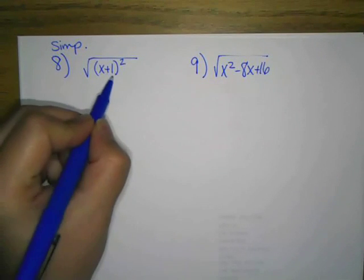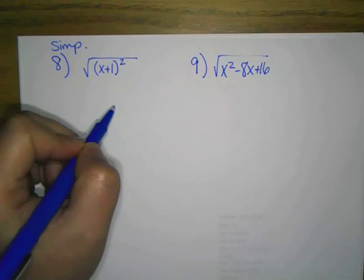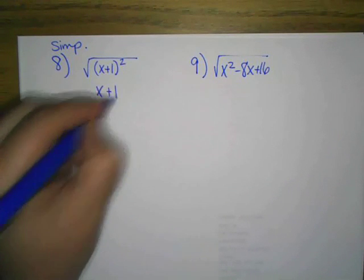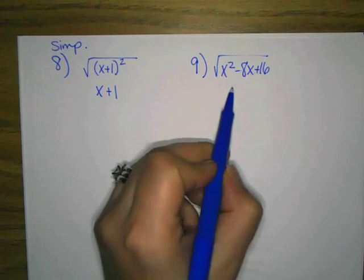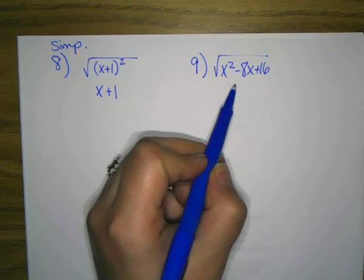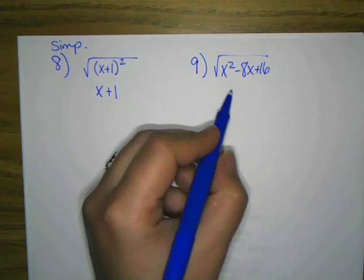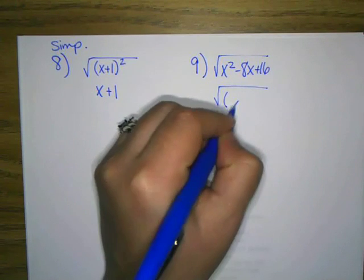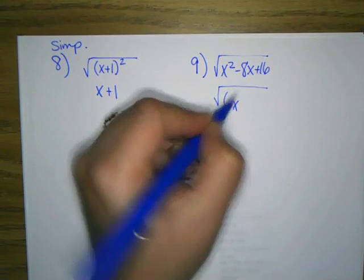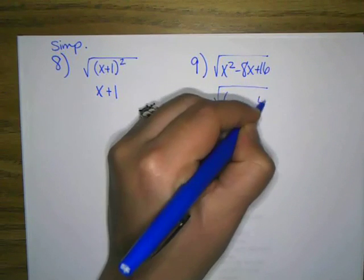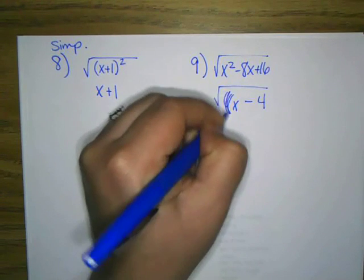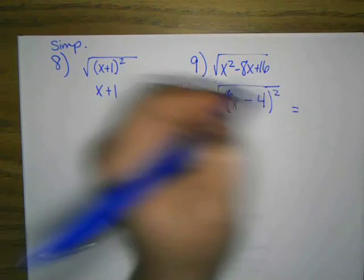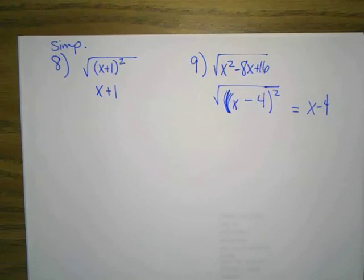So we have the square root of x plus 1 squared. We are undoing the square root with the squaring, and we're left with x plus 1. Here, you should recognize this trinomial, and this can be factored. And it's a perfect square trinomial, so this turns into the quantity x. We can square root the front is x. Square root the back is 4. Square root of 16 is 4. Sign in the middle is minus. And the square root of x minus 4 squared, which is then x minus 4.